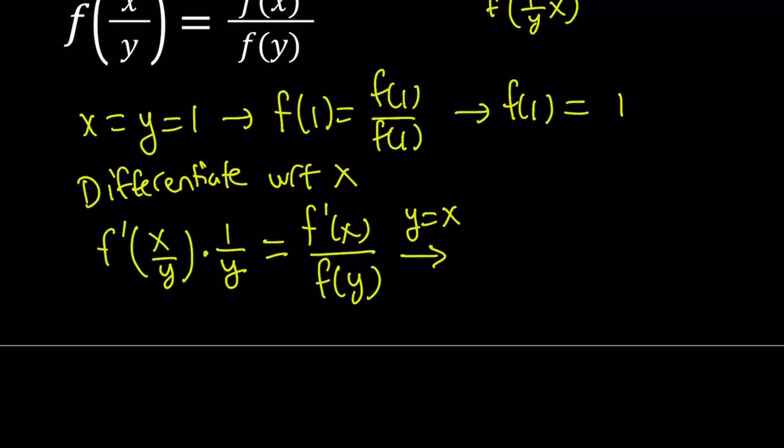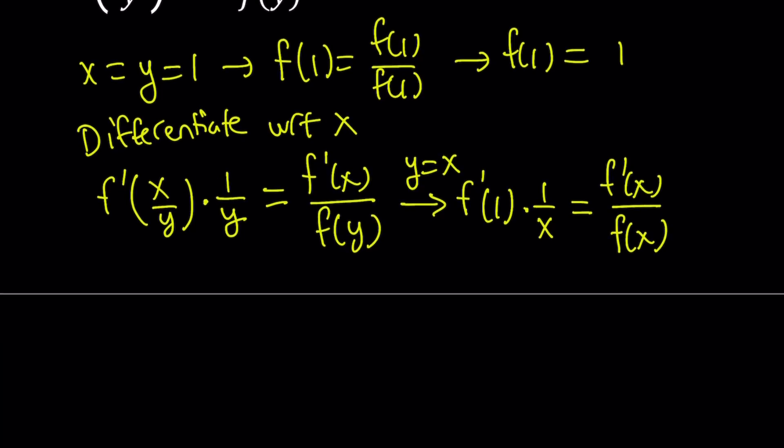So if I replace y with x on both sides, I get f prime of 1 multiplied by 1 over x, and on the right-hand side, f prime of x divided by f of x. So everything is written in terms of x.